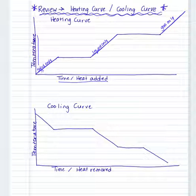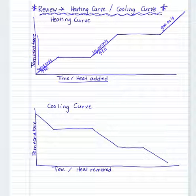Any of the places where the temperature is increasing and we have only one phase, we can say that we have an increase in kinetic energy. At these individual phases, the kinetic energy is increasing, so the molecules are speeding up.